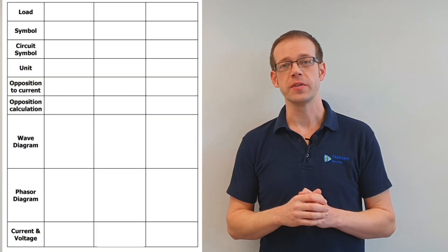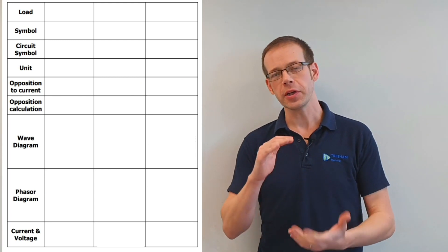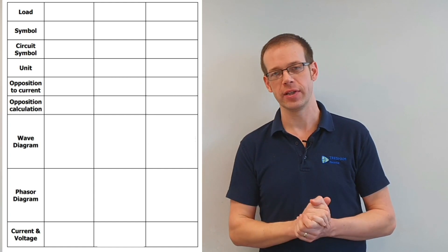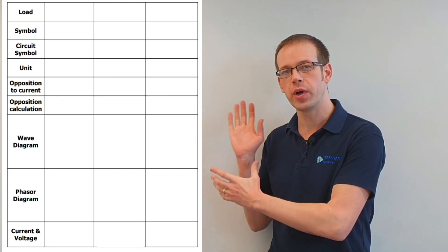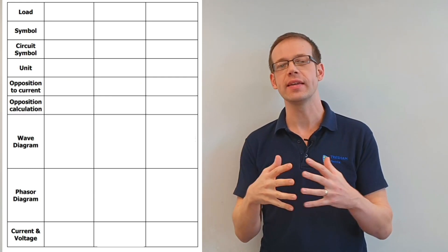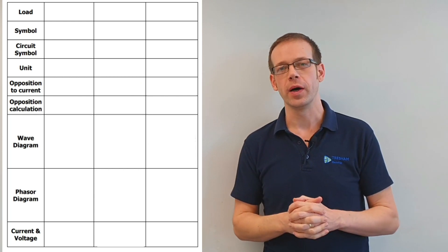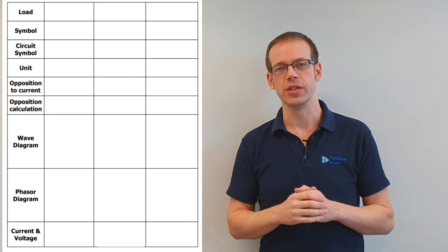Hello and welcome to this electrical principles training video. In this video we're going to have a summary of some of the material we've covered so far when discussing AC theory. Many videos back we started to discuss the mystery of the fluorescent lamp, where voltages and currents were behaving strangely. Since then we've discussed various aspects of AC theory and filled in the worksheet you can see on screen, which now brings together all those different elements to help figure out why that fluorescent lamp was behaving so strangely.